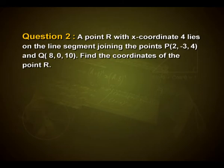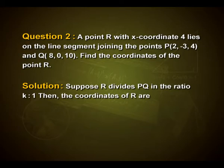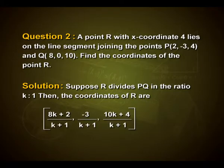Another example: a point R with x-coordinate 4 lies on the line segment joining P(2, −3, 4) and Q(8, 0, 10). Find the coordinates of point R. Suppose R divides PQ in the ratio k : 1. Then the coordinates of R are (8k+2)/(k+1), −3/(k+1)... wait, (0k−3)/(k+1), and (10k+4)/(k+1).